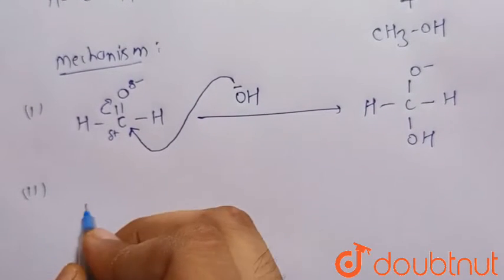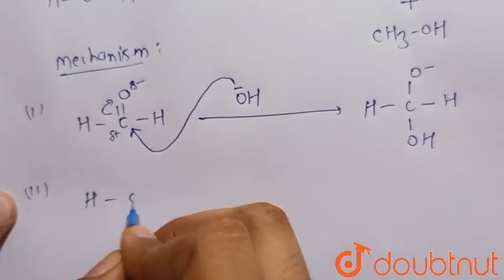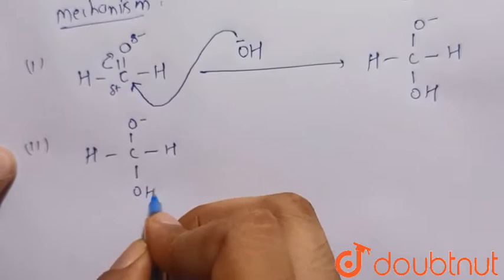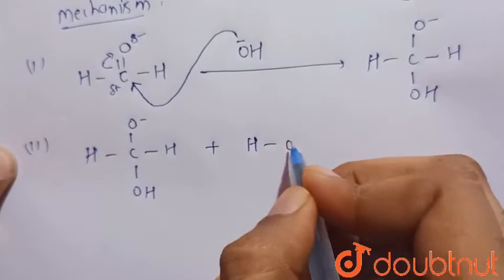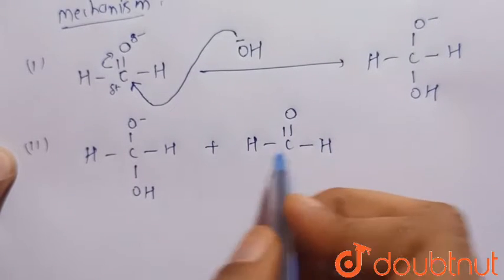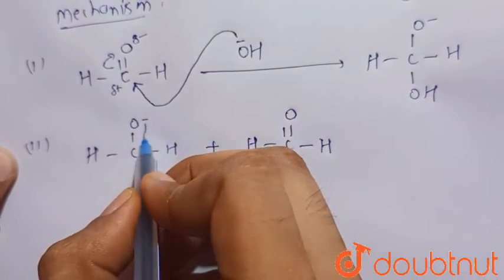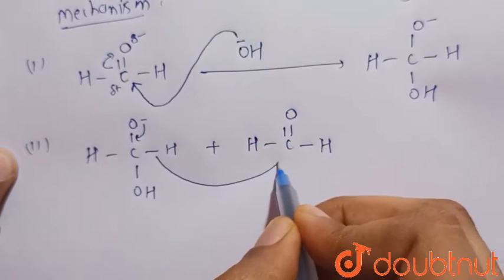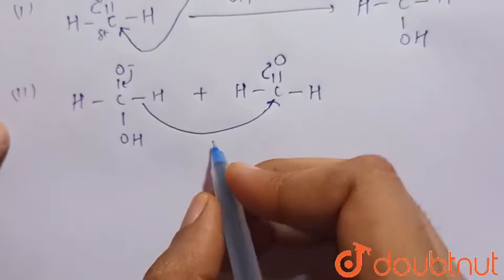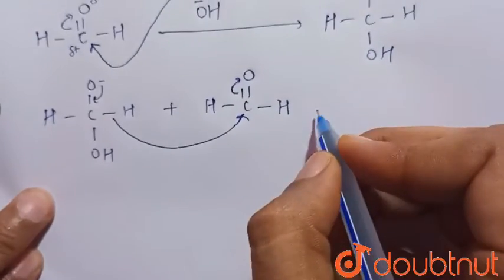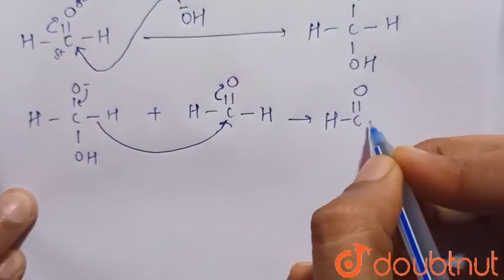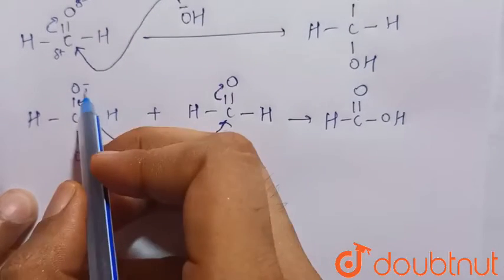Now consider the second step, that is transfer of the hydride ion. This is the slowest step or the rate-determining step. This will react with another molecule of formaldehyde. So this hydride will attack this electron deficient carbon and this bond breaks. So there is formation of H-C double bond O-H, that is this bond.